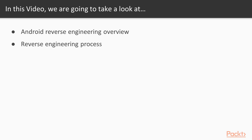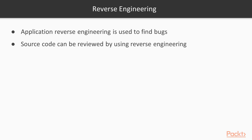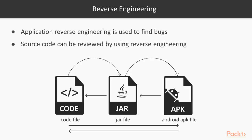In this video we are going to look at a couple of points: first, information about Android reverse engineering overview, and then what the process of reverse engineering inside an Android machine is. So let's start with what reverse engineering is. App reverse engineering is used to find bugs. Reverse engineering is quite simple — for example, if there is an APK file, an Android file, reverse engineering means reversing the process, so it will be converted into a JAR file.